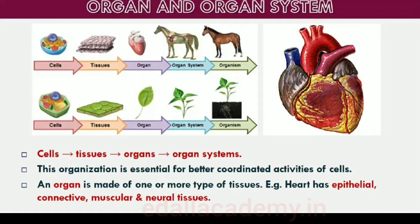Such an organization is called tissue. All complex animals consist of only four basic types of tissues. These tissues are organized in specific proportion and pattern to form an organ like stomach, lung, heart and kidney. When two or more organs perform a common function by their physical and/or chemical interaction, they together form an organ system, for example, digestive system, respiratory system, etc.